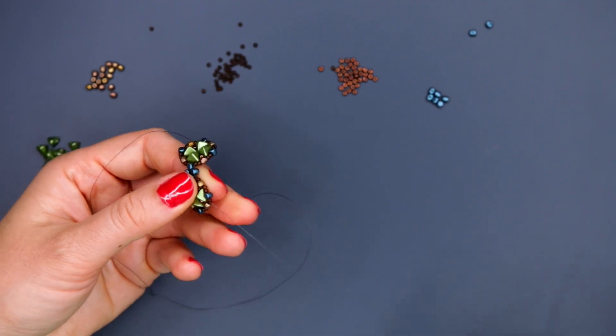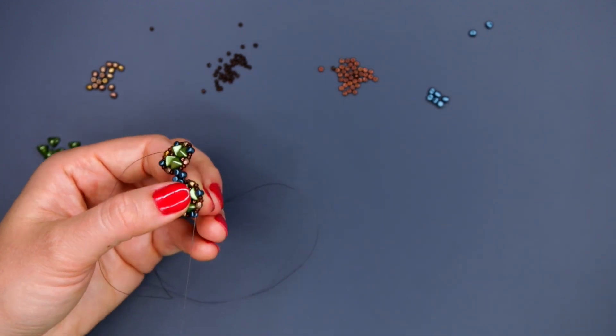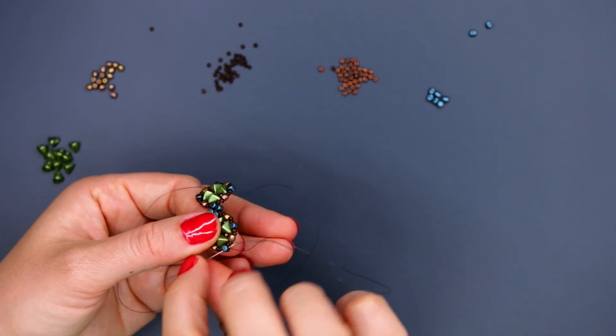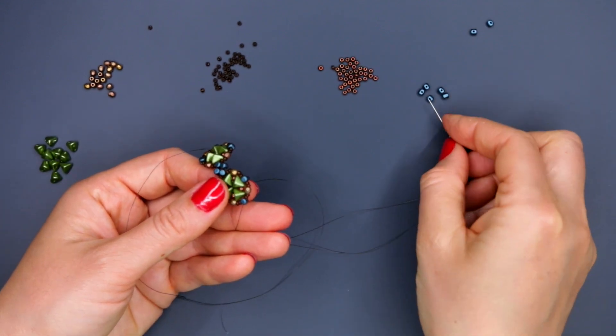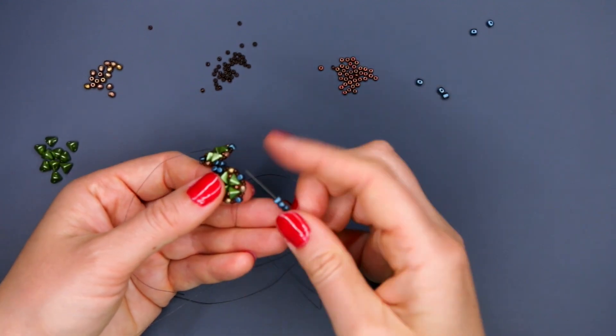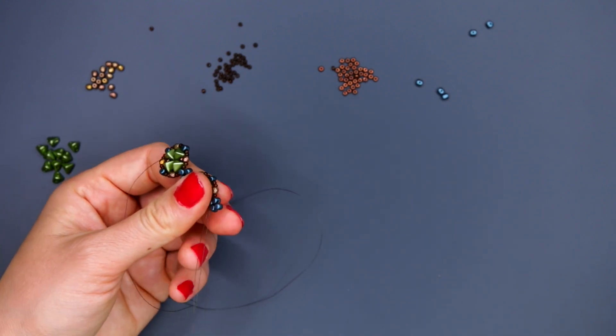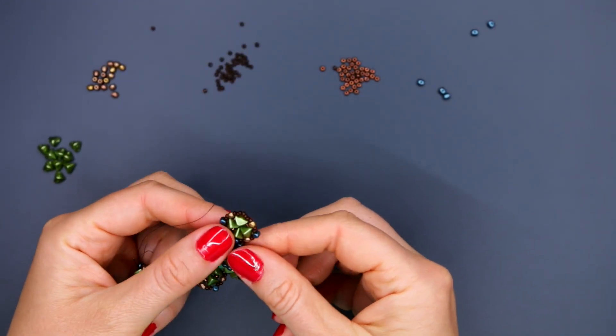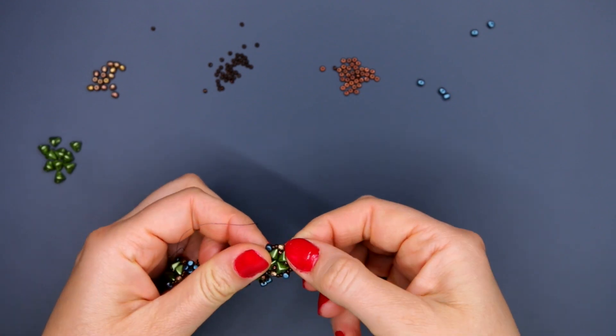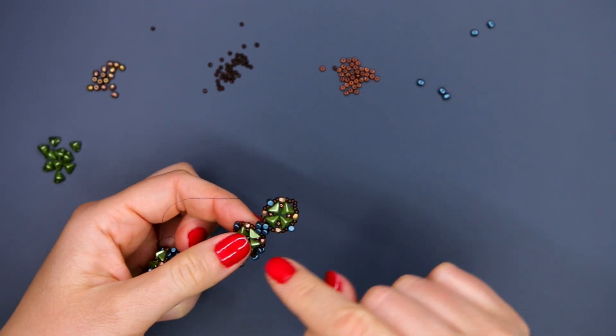In the same manner we do required number of elements. When the thread will be used, you can continue to weave symmetrically with the second end of the fire line we have left in the beginning. Like that I have made 8 elements. On the last element we need to do a loop from beads for findings.